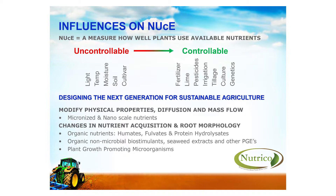In that, there are aspects that are controllable and aspects that are uncontrollable. The uncontrollable ones are typically light, temperature, moisture, and soil structure. What we can control includes the fertilizer, the type of fertilizer, the application methods, the lime, the pesticides, the irrigation, the tillage, the practices, the culture — meaning how a farmer farms — and genetics.